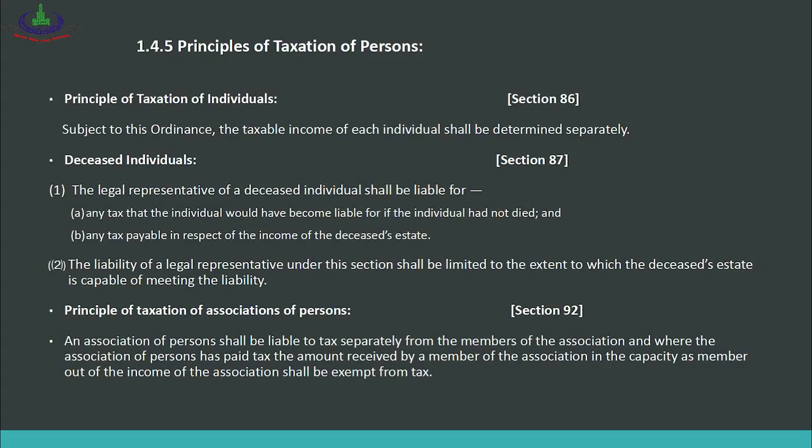Now we discuss the principles of taxation of persons as stated in the Income Tax Ordinance 2001. Section 86 states: subject to this ordinance, the taxable income of each individual shall be determined separately — a husband and wife's income will not be combined for taxation; each individual's income will be taxed separately. Section 87 covers deceased individuals: the legal representative of a deceased individual shall be liable for any tax that the individual would have become liable for if the individual had not died. So if a person passes away, their tax liability remains as if they had not died, and it is still payable.